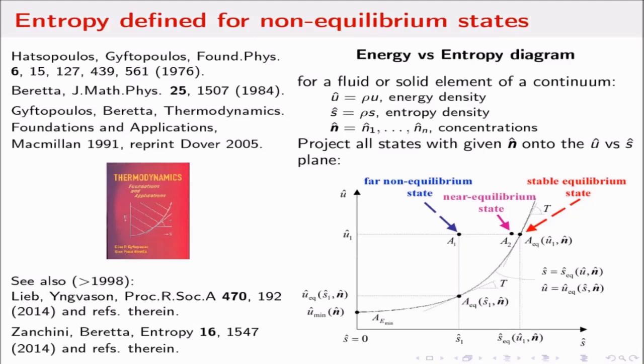For a system, for example a fluid element, this is energy density, entropy density, and concentrations with the hat, which means density. You can draw an energy versus entropy diagram, which is also the cover of our book in 1991. On this diagram we can show that for a given energy, a system has many states, only one is a stable equilibrium state. The others are non-equilibrium. This is the realm of Onsager reciprocity. This is a more open field of research.